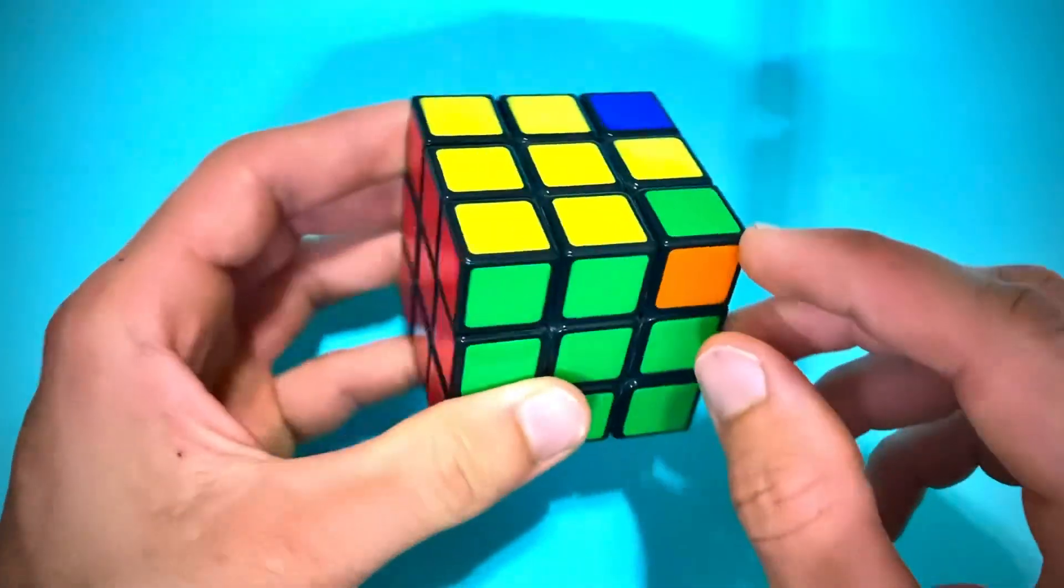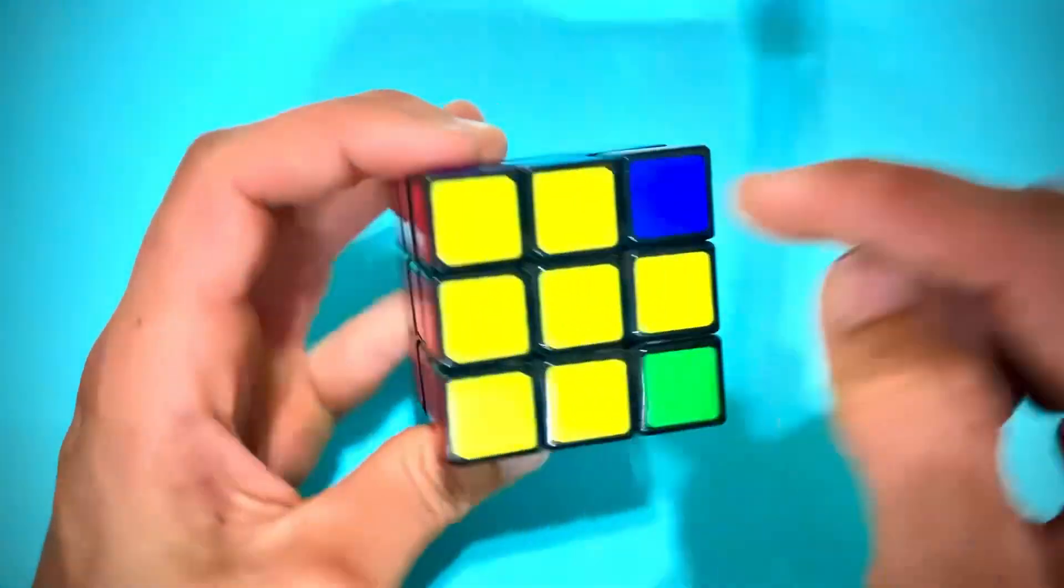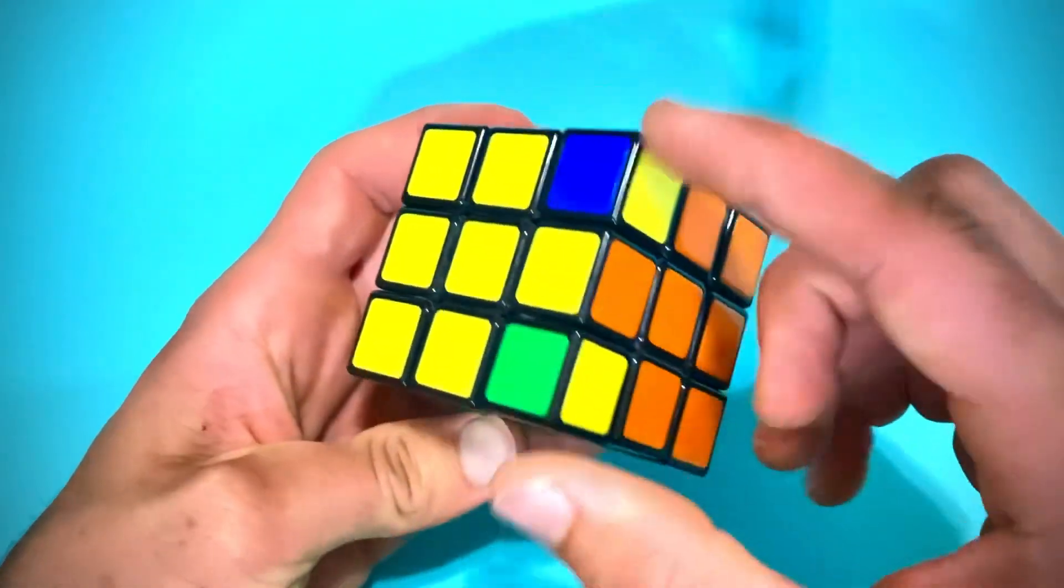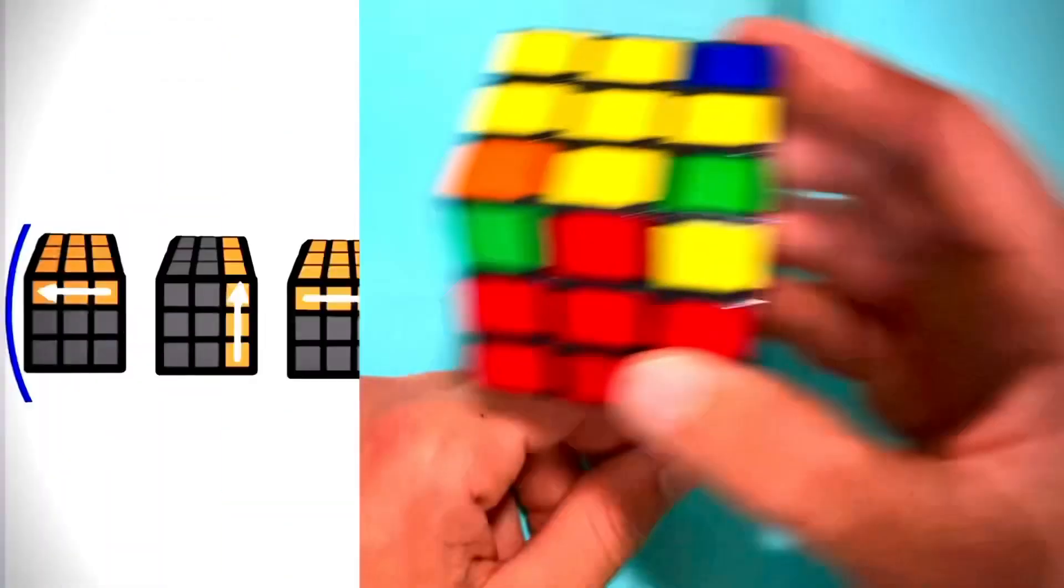And as you can see each corner is in its correct location now, even if it's twisted like these two. Here's a picture of what the sequence looks like.